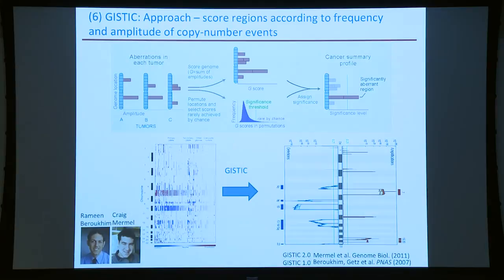GISTIC, developed with Ramin Baruchim and Craig Mermel, collects evidence of copy number gain in every region of the genome by summing events across the patient population. Assuming all are passengers, they could occur anywhere in the genome with roughly equal probability. We shuffle mutations to generate a null distribution, assign p-values to each peak, correct for multiple hypothesis testing, and get significant peaks. MuteSig has a similar approach for point mutations: tallying mutations in each gene, accounting for gene length, calculating p-values, correcting for multiple hypotheses, and calling genes with FDR less than 0.1 as candidate cancer genes.